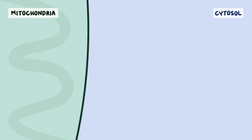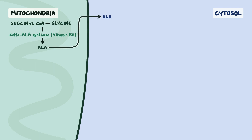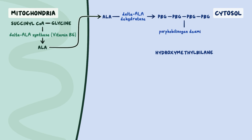The process of heme synthesis happens both within the mitochondria and the cytosol of a cell, and requires multiple enzymes to catalyze the numerous steps. It starts in the mitochondria, where succinyl-CoA binds to glycine via delta-ALA synthase, which uses vitamin B6 as a cofactor to produce delta-aminolevulinic acid, or ALA. Then, in the cytosol, delta-aminolevulinic acid is converted to porphobilinogen, or PBG, via delta-ALA dehydratase. From there, four molecules of porphobilinogen condense together to form hydroxymethylbilane, with the help of porphobilinogen deaminase. Note that porphobilinogen deaminase is sometimes called uroporphyrinogen-1 synthase, or hydroxymethylbilane synthase, or HMBS for short.